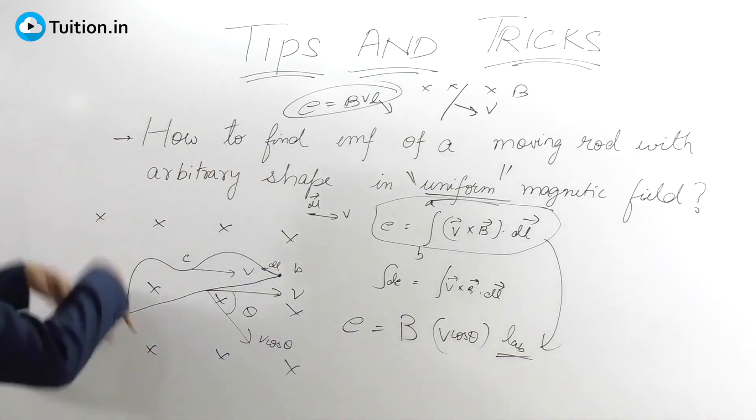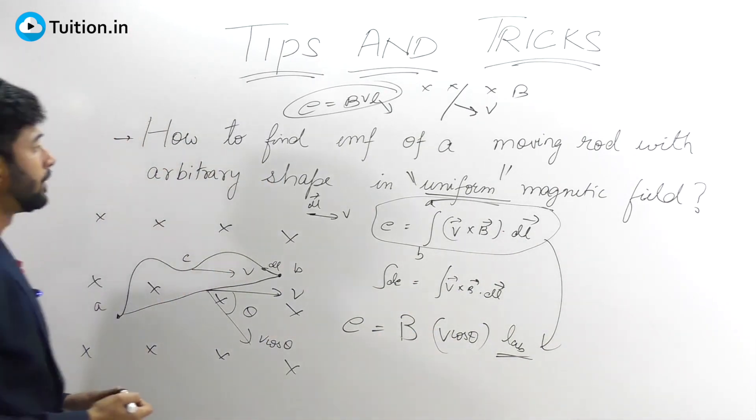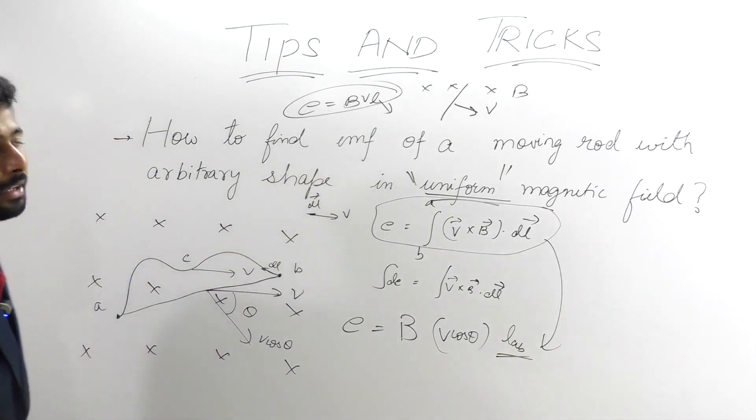You won't take the component along the length, only the one perpendicular to the length, and that's your v cos theta. So this is how you find the EMF of a moving rod of arbitrary shape in a uniform magnetic field.